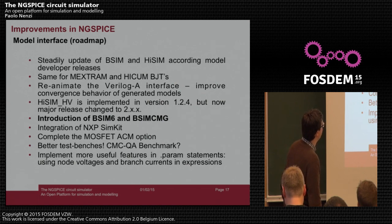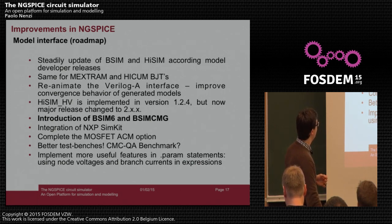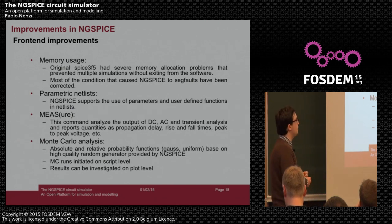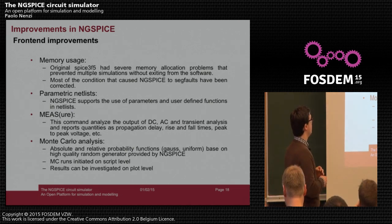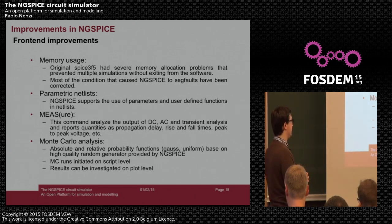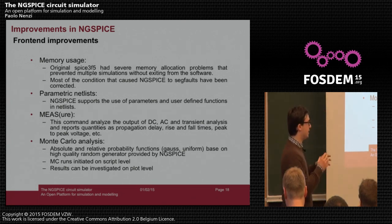The roadmap for models includes mainly the introduction of BSIM6 and BSIM-CMG multigate, and integration of the NXP-simkit, mainly for PSP models. On the front-end side we have many improvements, especially bug fixes and memory leak fixes. We support parametric netlists and a command called dot-meas, which is a post-processing tool.